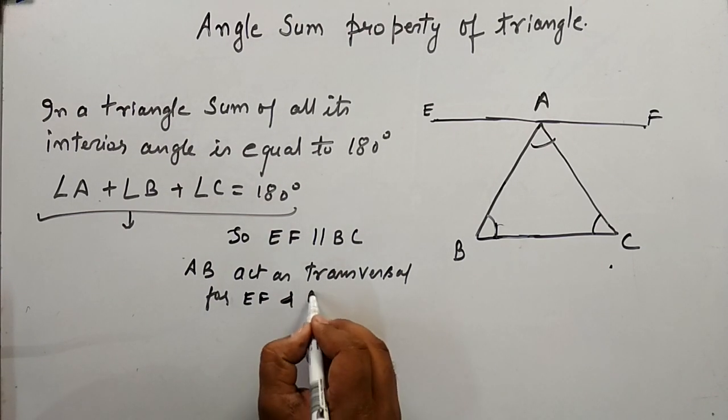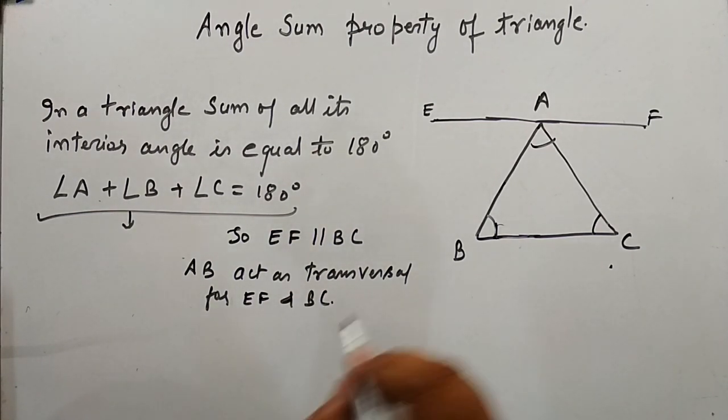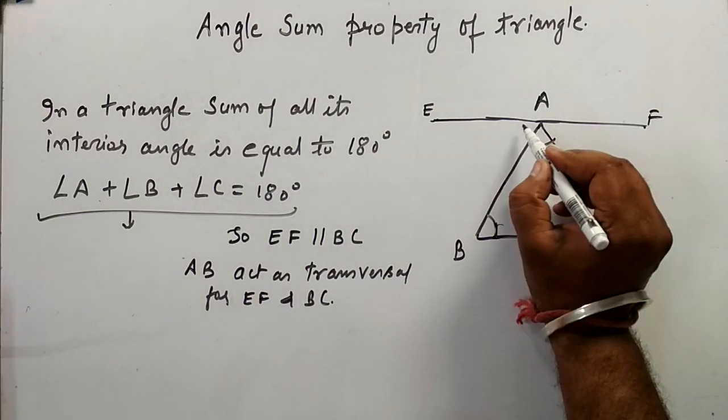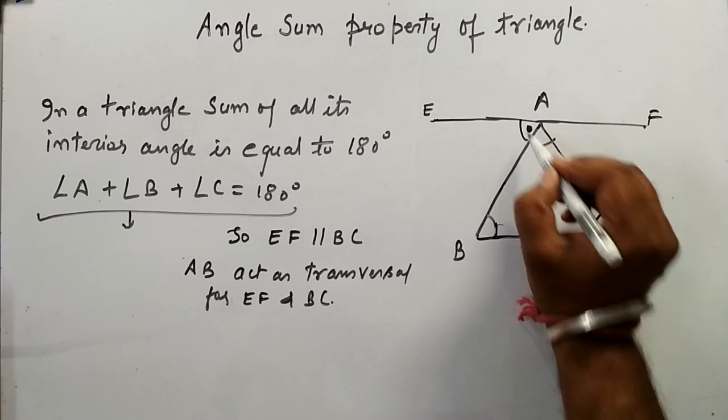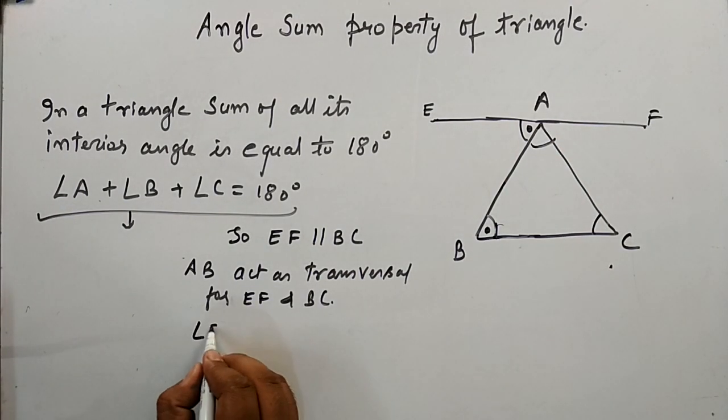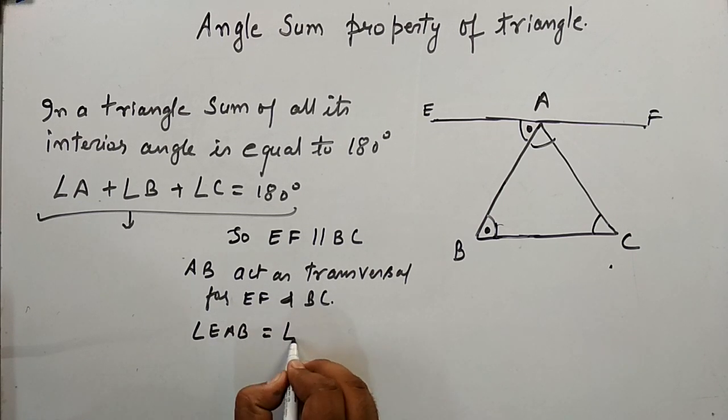So we can see here clearly that this angle EAB is equals to angle ABC, and angle ABC is equals to angle B.